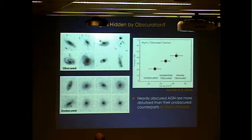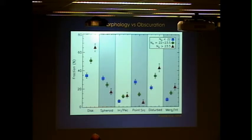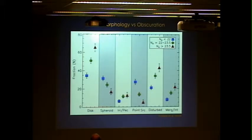Looking at host morphologies versus obscuration, the blue points are unobscured sources, green are moderately obscured, and red are our Compton Thick sources. We see an increase in disk fraction and disturbed fraction as a function of obscuration, a decrease in spheroid fraction, and a higher fraction of point sources for unobscured sources. Even with a conservative classification that excludes asymmetric morphologies, we still find a statistically significant ~2.7 sigma excess of interaction signatures in the Compton Thick sources relative to unobscured sources.